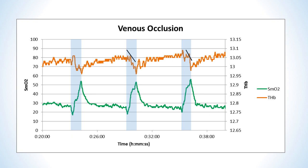Sometimes a venous occlusion is superimposed on a muscle compression. In this case, THB may not actually drop after the muscle tension is released, but the magnitude of the compression recovery will be smaller.